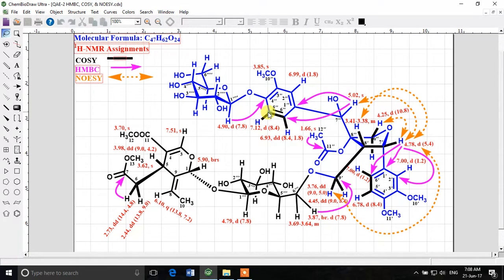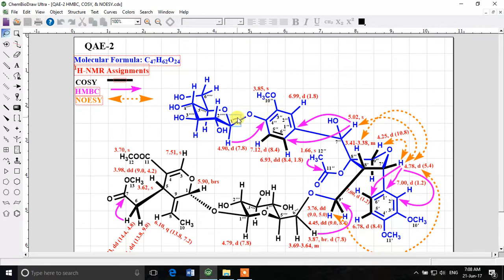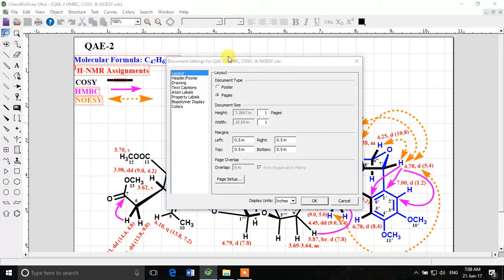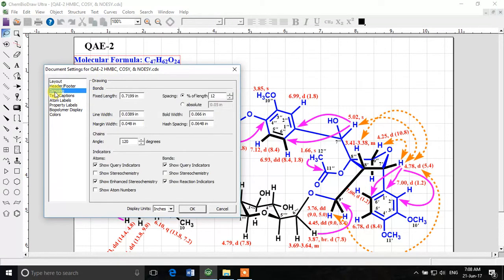Before doing that, I can also show you the settings with which this molecule is looking so beautiful in this document. The width of the lines and everything. So you can just put these numbers into your document and you can make a similar document. I'll go to File, Document Settings, and here you can see the drawing settings.